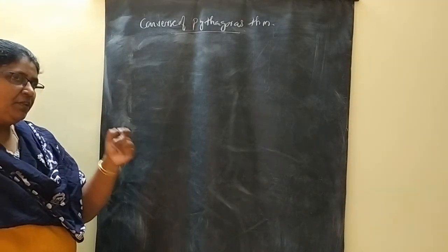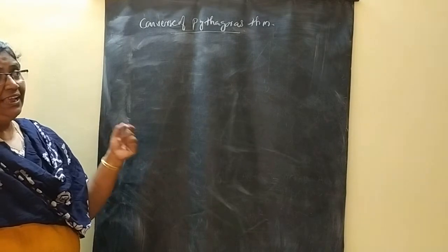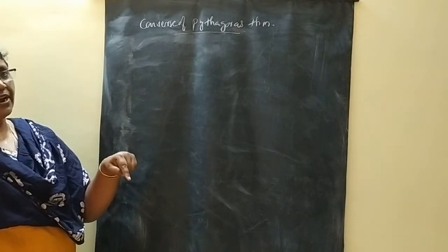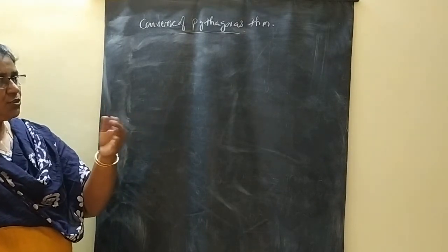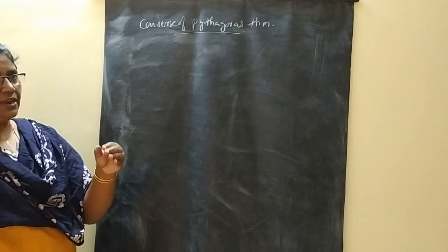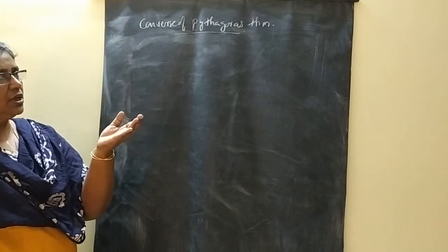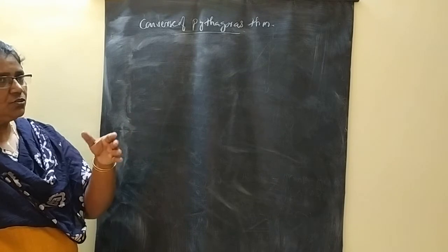What is Pythagoras Theorem? If you have a right triangle, then the square of the side opposite to that angle. Okay?